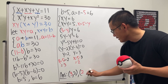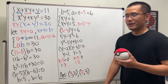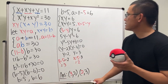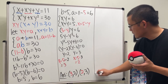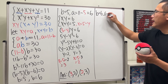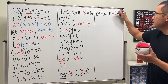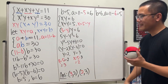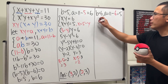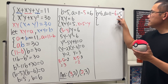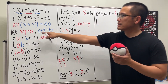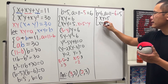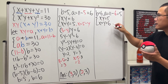We also have to look at the case when b equals 6. When b equals 6, a equals 11 minus 6, which equals 5. This equation is very symmetrical. So this means x times y equals 5, and x plus y equals b, which is 6.